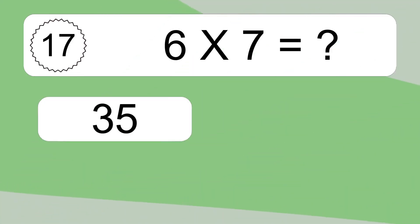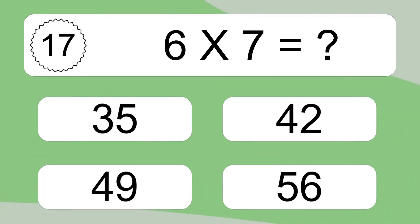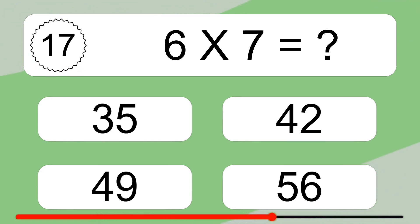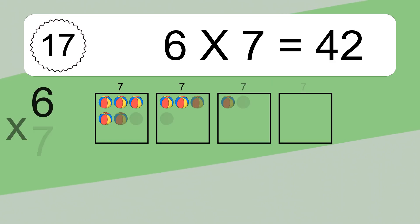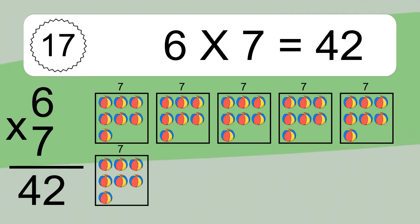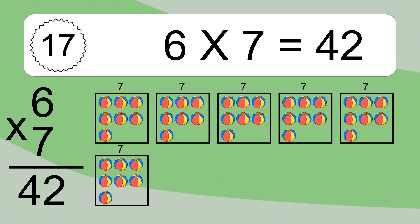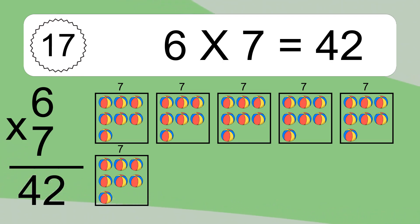6 times 7 equals what? 6 times 7 equals 42. We have 6 boxes, and each box has 7 colorful balls inside. If you count all the balls in all the boxes together, you will have 6 times 7 balls. This equals 42 balls.